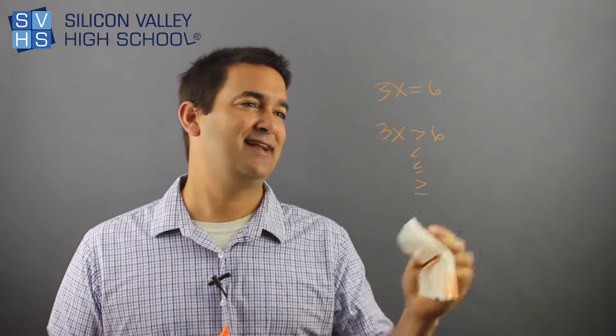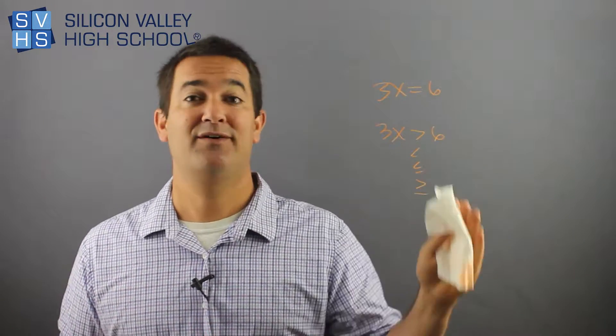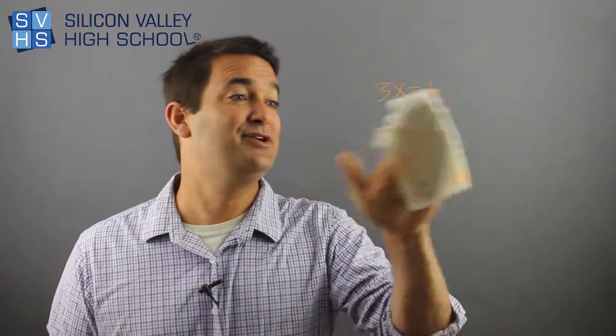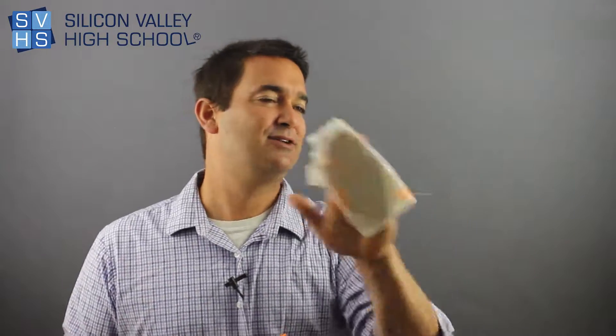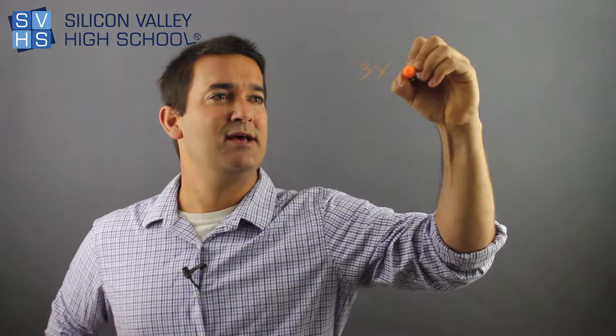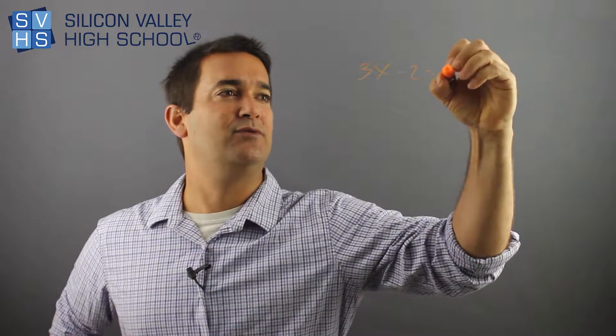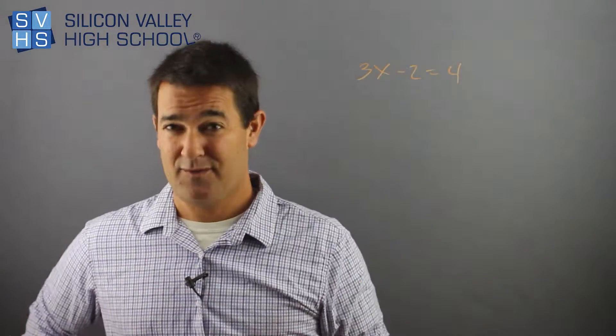The good news is that if you're half decent at algebra, then you're automatically good at solving algebraic inequalities. So again, if you had a straight-up normal problem like 3x minus 2 equals 4,